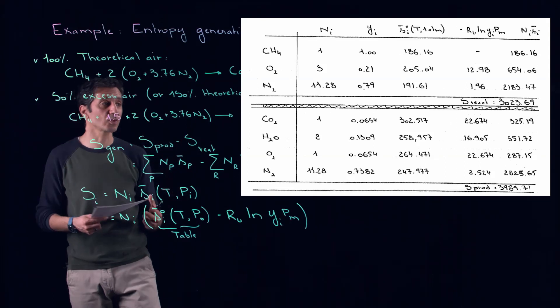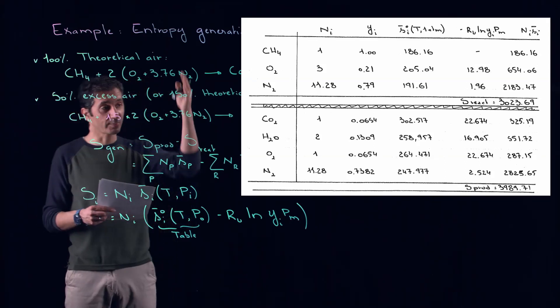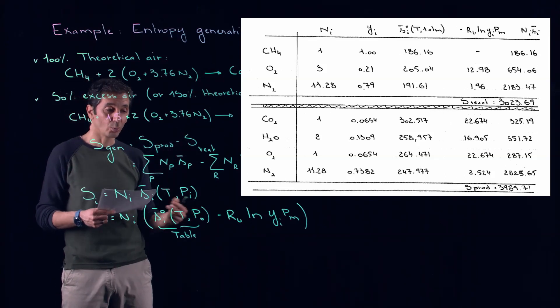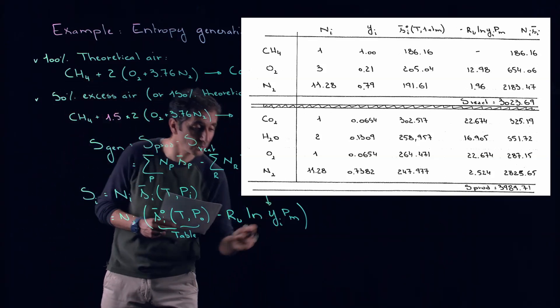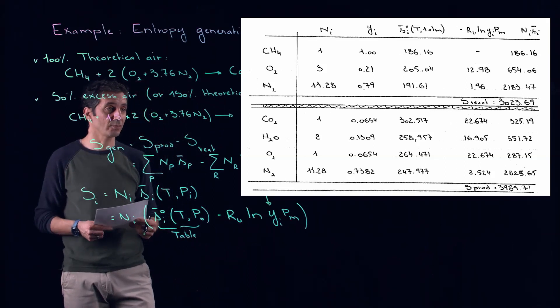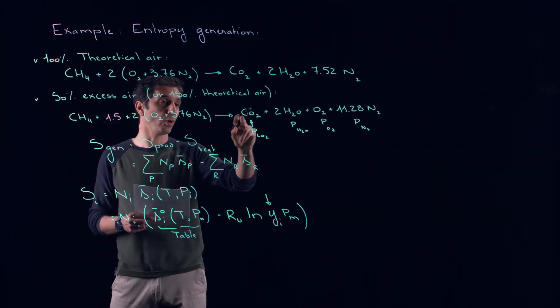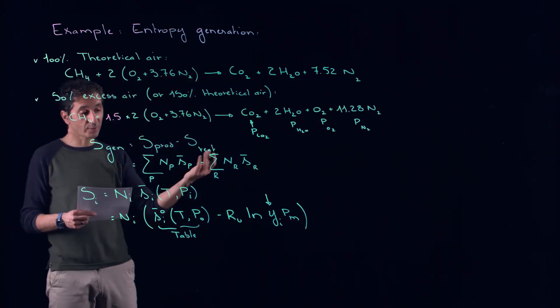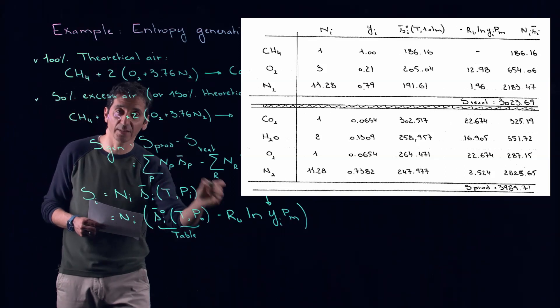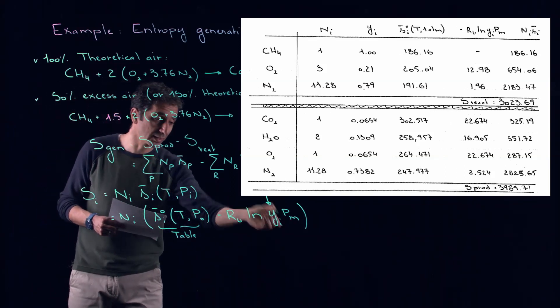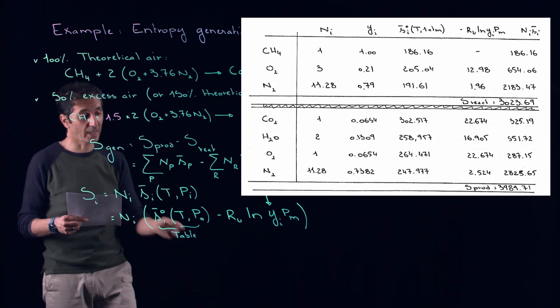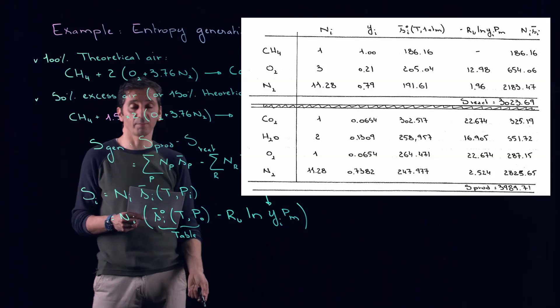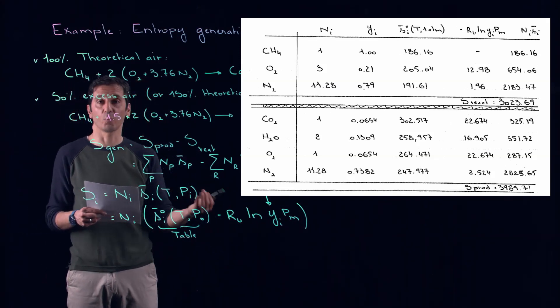After this is just drawing a table like this where we have each substance, we have the number of moles NI, then we have YI that we have to calculate. So the mole fraction, for example here, one kilomole of CO2 over the summation of all the number of moles. Then after this, we get this value from a table and then we just calculate this term: minus R universal constant, we just calculated YI, and then we multiply by the pressure of the mixture which is in our case here one atmosphere.